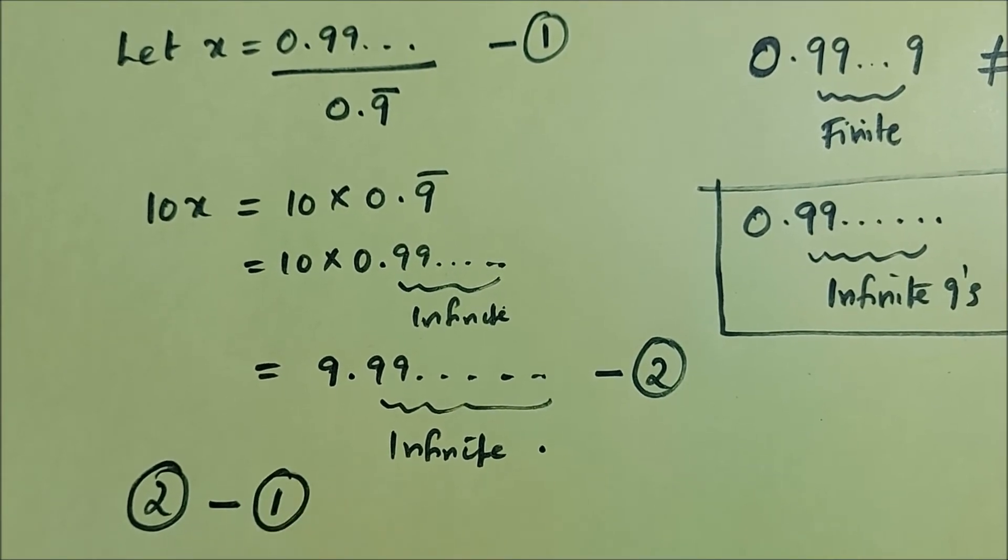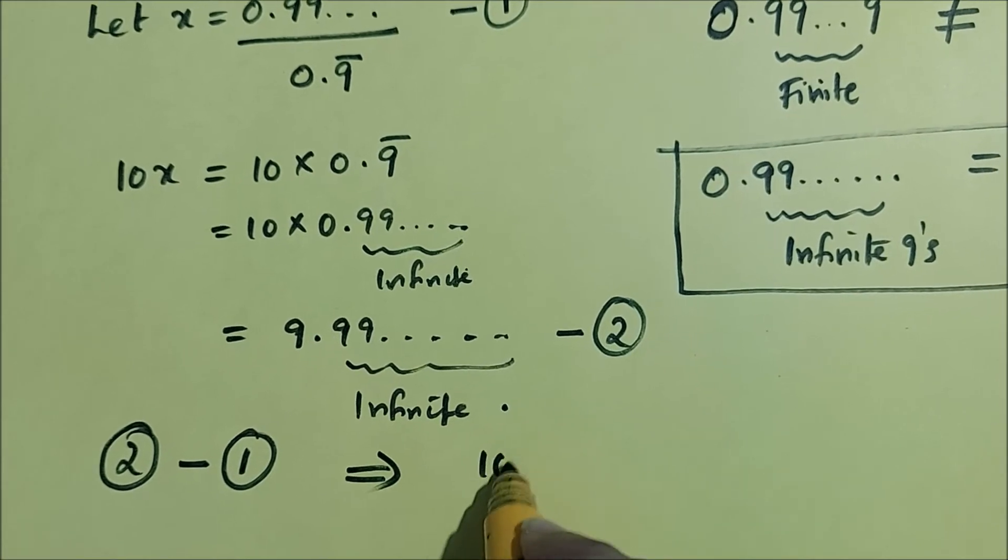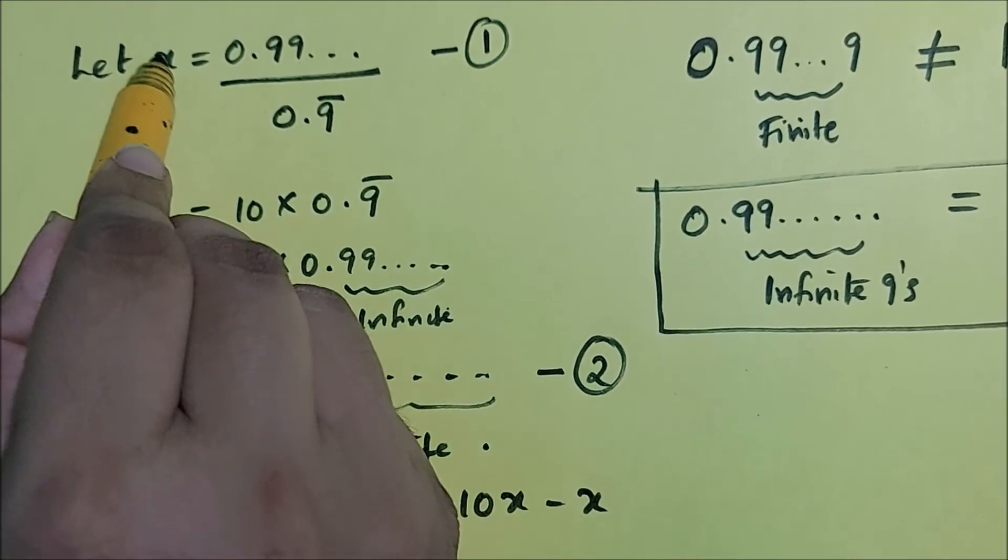We subtract equation 1 from equation 2. What we will get when we subtract the first LHS from the second LHS is 10x minus x.